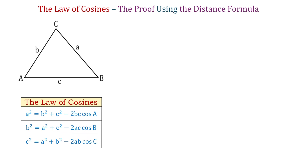The third one is C squared equals A squared plus B squared minus 2AB cosine of angle C. In any of these formulas, the square of any side is equal to the sum of the squares of the other two sides minus twice the product of these two sides multiplied by cosine of their included angle.